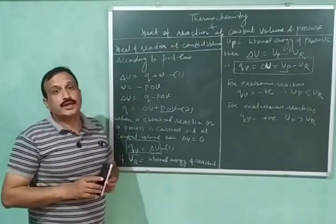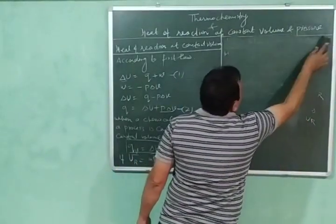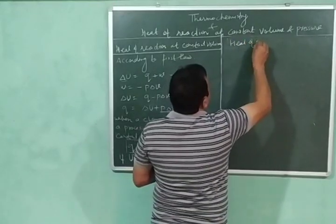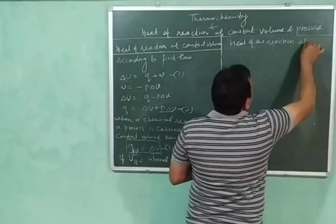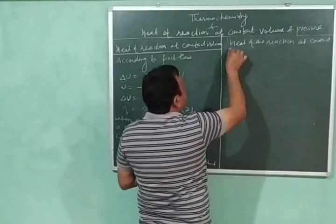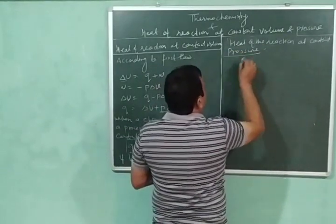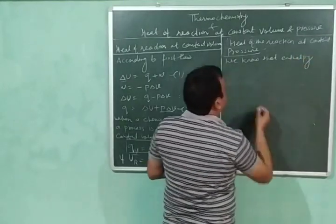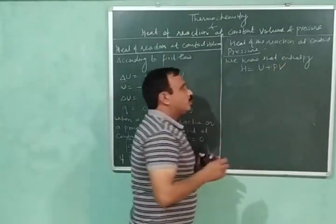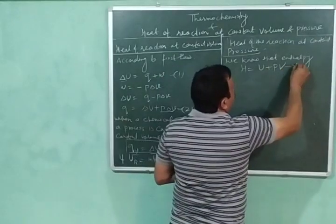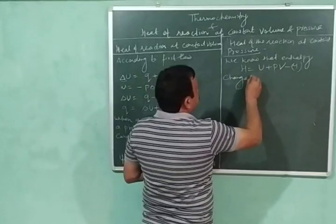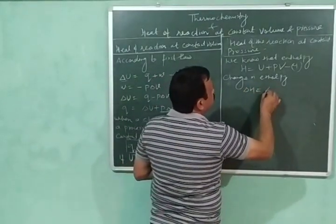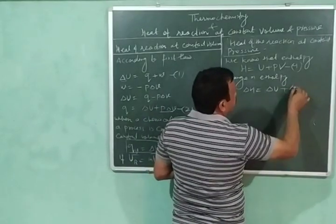Now let us discuss the heat of reaction at constant pressure. We know that enthalpy H = U + PV. Let this be equation number 4. The change in enthalpy will be ΔH = ΔU + Δ(PV).